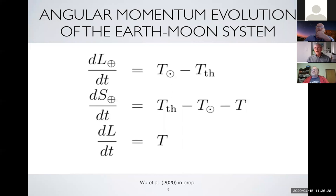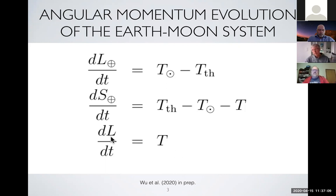I'll start with a simplified version of the physics. The angular momentum in the Earth-Moon system has really four components, and I'll only talk about three. The biggest is the orbital angular momentum of the Earth around the Sun, which dominates by far. Another component is the spin of the Earth, which you think of as the length of the day. The third is the orbital angular momentum of the Moon around the Earth. The Moon's spin angular momentum is much smaller than its orbital angular momentum because it's tidally locked, so I'll neglect that.